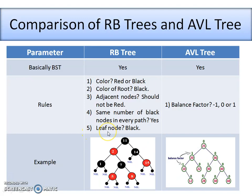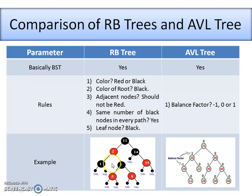The last property is very simple: check whether every leaf node — that is, the nil node — is of color black. Yes, all nil nodes are of color black. Therefore, all five properties are satisfied, and the given tree is also a binary search tree. Hence, we can say this is an example of a Red-Black tree.